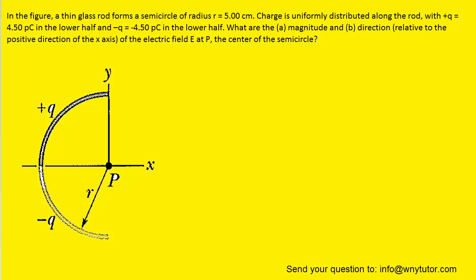If you haven't done so yet, please pause the video and try to answer the question on your own before listening on. We're going to begin by just erasing this line that's marked R, just to get it out of our way temporarily. And what we'll do next is we'll choose a very small section of the circle that has the charge of positive Q, and we can just color in a little section of that.